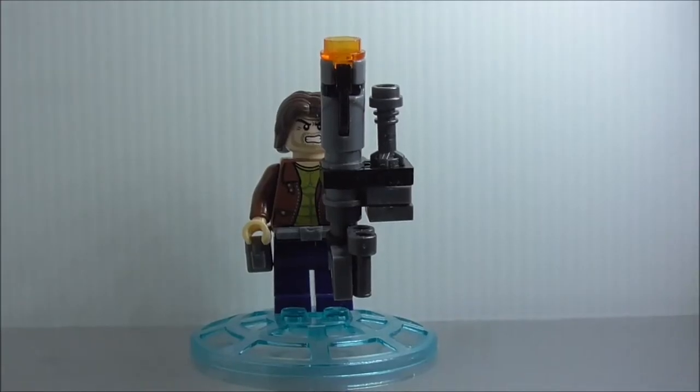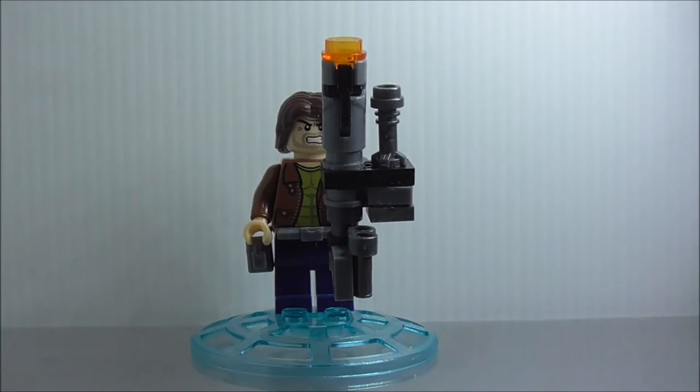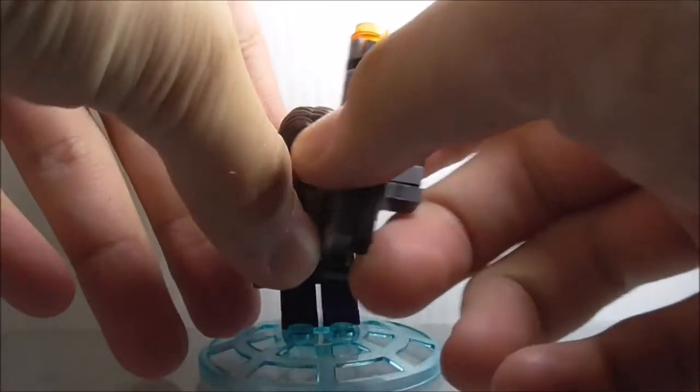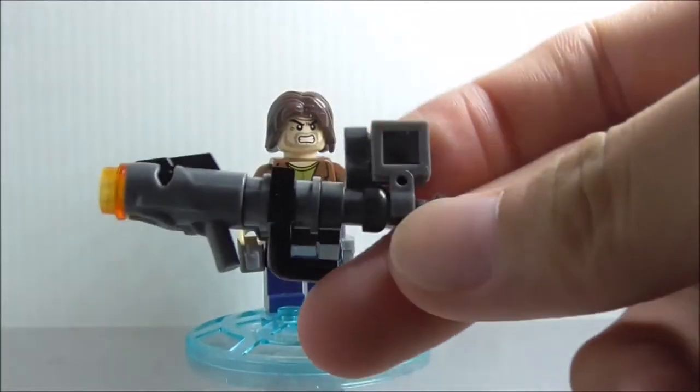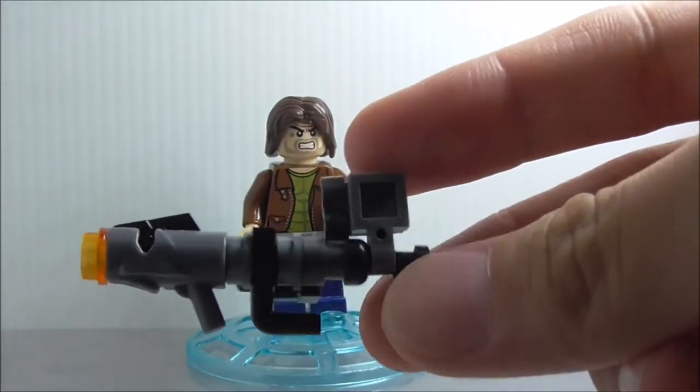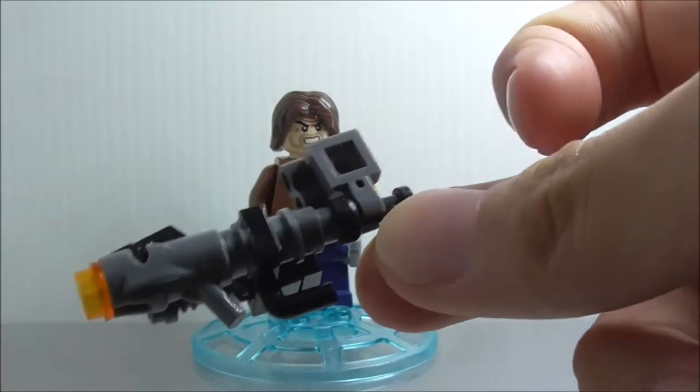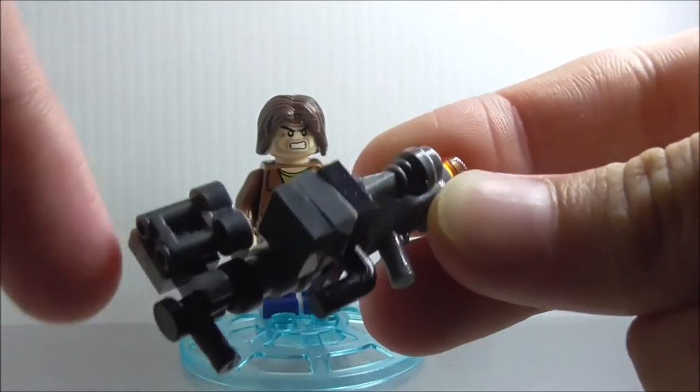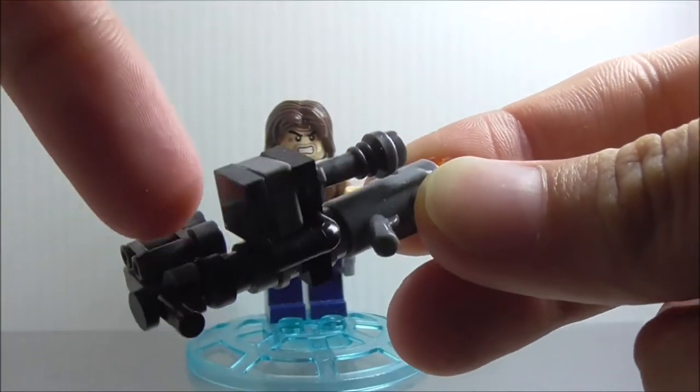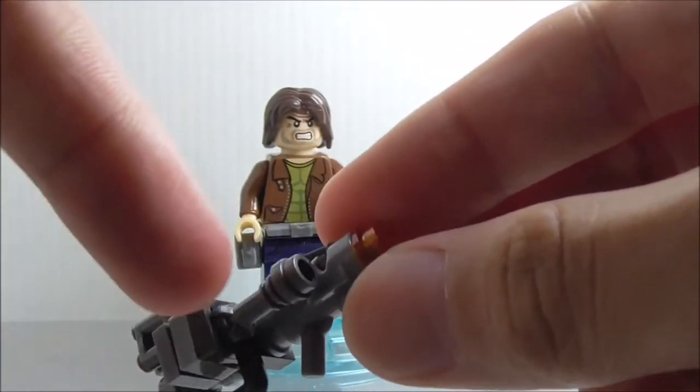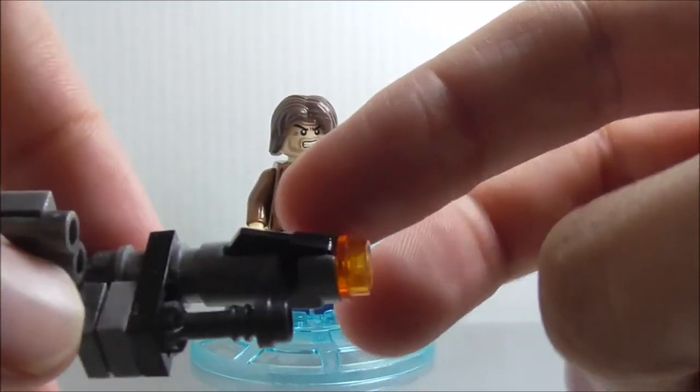First off on the minifigs, this is Cade. He is armed with this giant blaster, could be an alien blaster or just like an RPG or something. You got this scope thing right here and you got this barrel and another barrel which is the stud shooter.